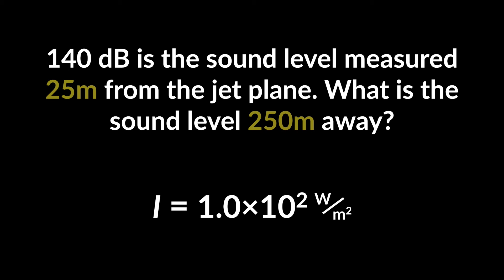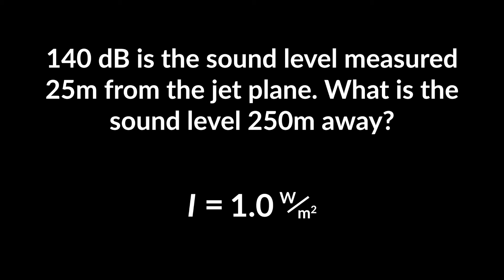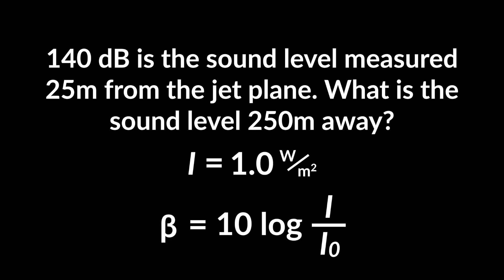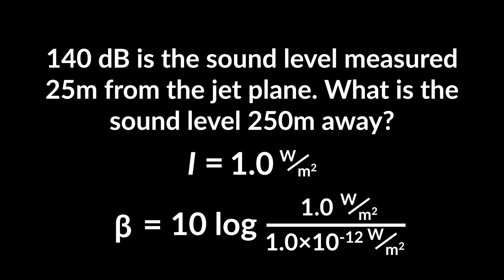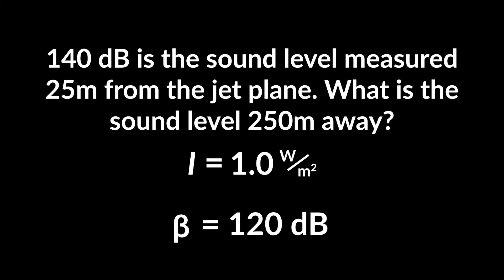So plugging that in, we'd get 1 over 10 squared times 1.0 times 10 squared would give us just 1 watt per meter squared. That's the intensity. But the question actually asks for the sound level, so we can just plug this into the equation. 10 times the logarithm of I over I₀. I is 1, I₀ is 1.0 times 10 to the minus 12. And the answer is 120 decibels.